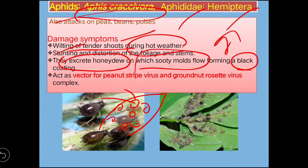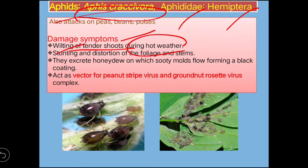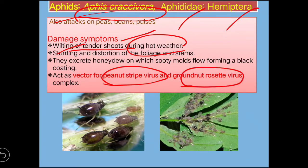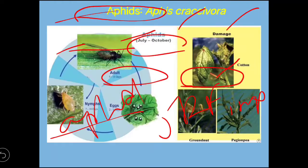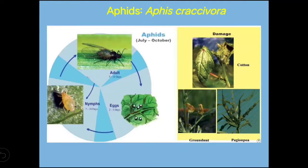An important thing to remember is that the aphid of groundnut transmits two viruses: Peanut Stripe Virus and Groundnut Rosette Virus. This is very important for JRF questions — if asked which insect transmits groundnut rosette virus, the answer is aphid.